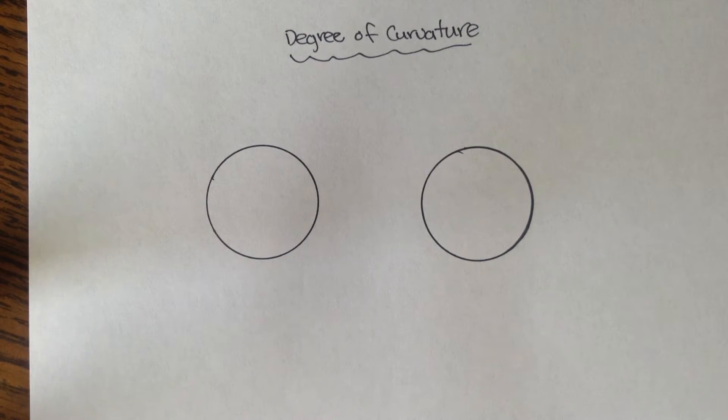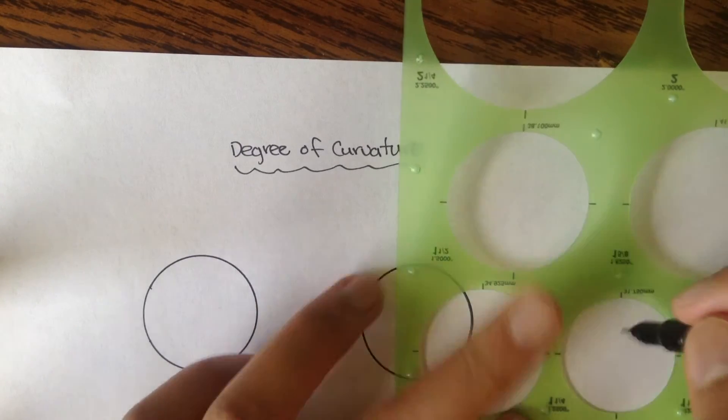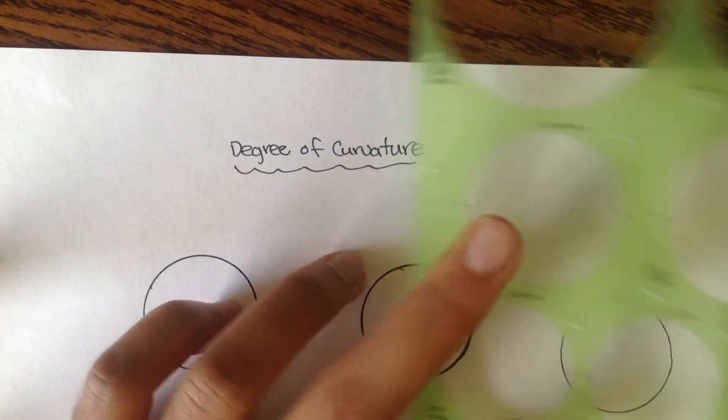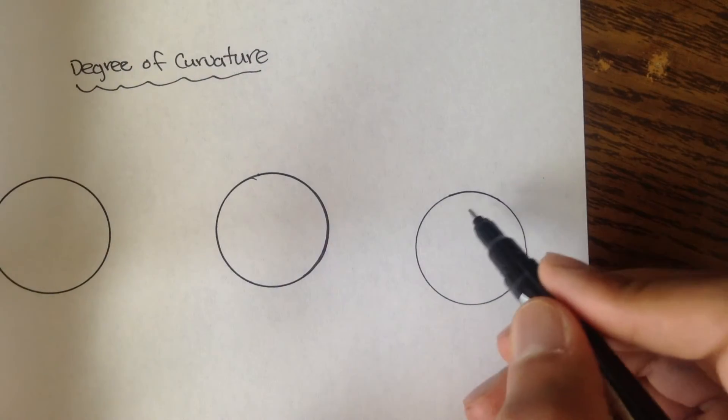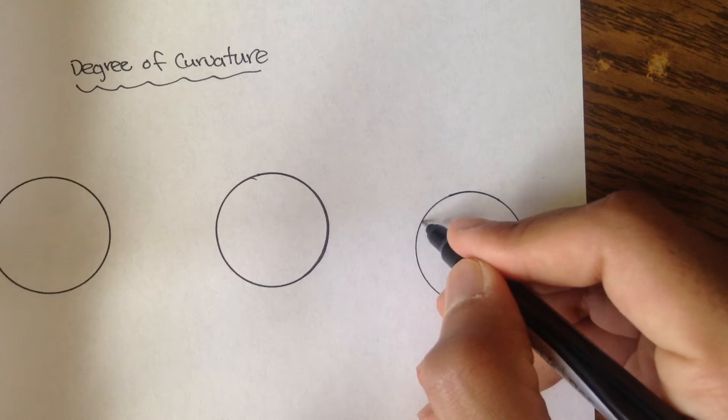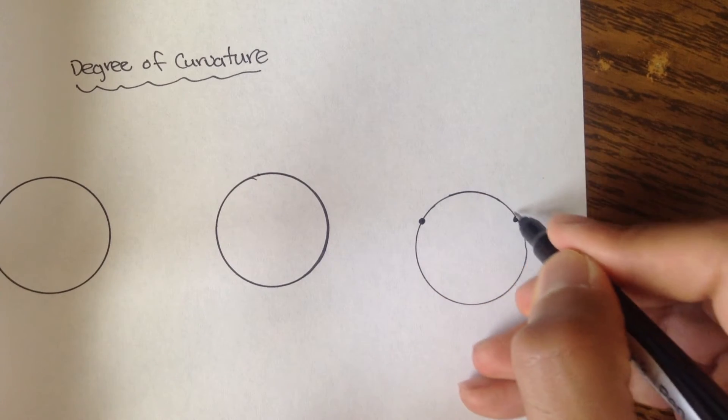Degree of curvatures are, if you remember from the last several videos, if you have some sort of a... Actually, let me draw out one more. If you have some arc, let's say you had some curve, started here, ended here. And this is the curve you're following.